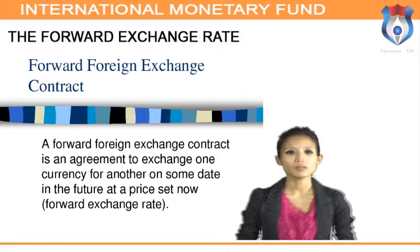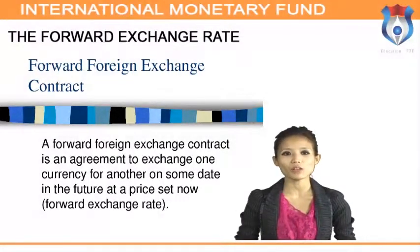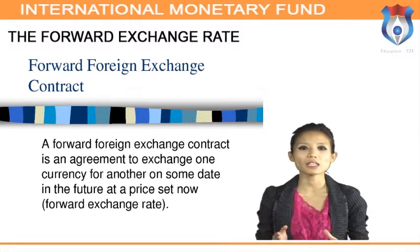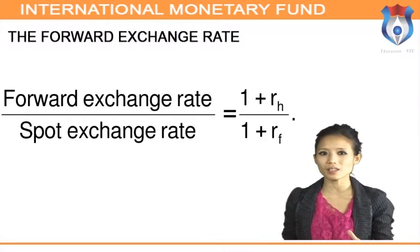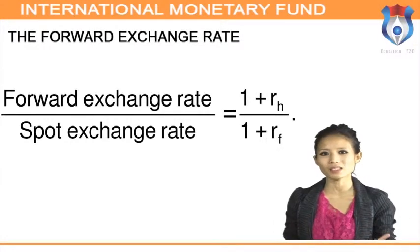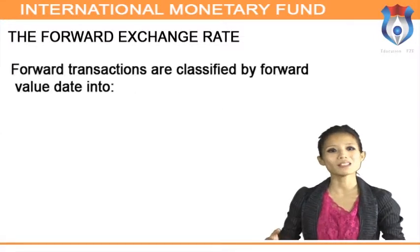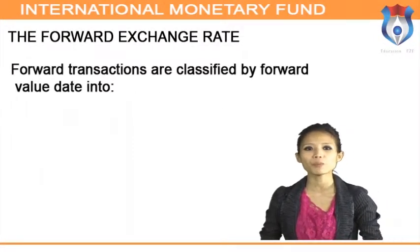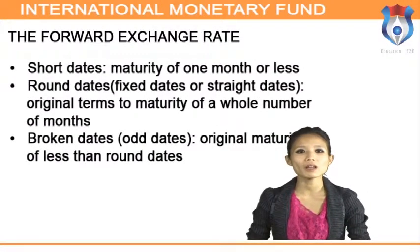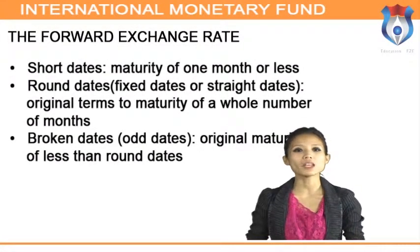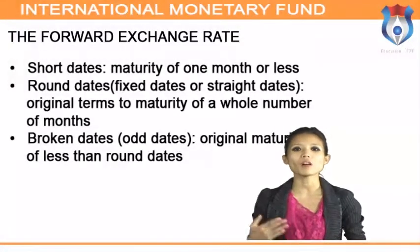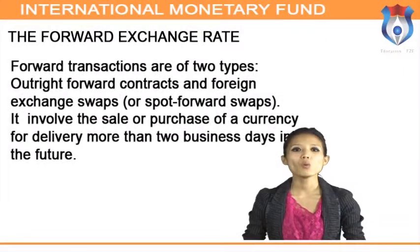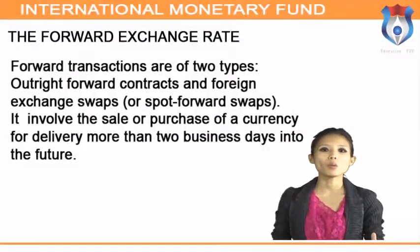The forward exchange rate is a rate contracted today for the delivery of a currency at a specified date in the future. This date, called the forward value date, must be more than two business days away; otherwise the underlying transaction will be a spot transaction. Forward transactions are classified by forward value date into short-date (maturity of one month or less), round date (a fixed or straight date), and broken dates with original terms to maturity of a whole number of months.